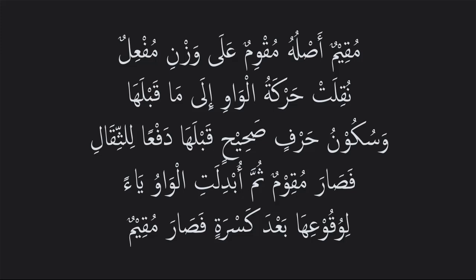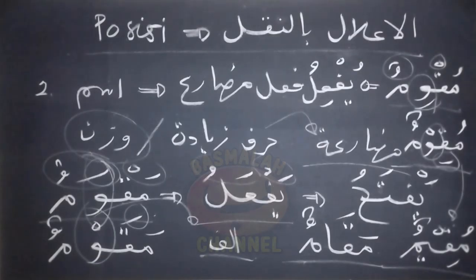Proses i'lalnya dalam bahasa Arab: muk'uamun asluhu muk'uamun ala wazni muf'ilun. Nukilat harkatul wawi ilama qoblaha wasukun waharfin sohehin qoblaha daf'an lifiqol. Artinya: lafad muk'uamun pada asalnya adalah muk'uamun, mengikuti wazan muf'ilun. Harkat dari huruf waw dipindah atau ditukar dengan harkat dari huruf sebelumnya, sementara huruf sebelumnya tersebut berupa huruf soheh yang dalam keadaan sukun, hal itu dilakukan dalam rangka agar supaya menghindari bacaan yang berat, maka jadilah muk'uamun. Selanjutnya huruf waw diganti dengan huruf ya karena posisi daripada huruf waw tersebut terletak setelahnya harkat kasro, maka jadilah lafad muk'uamun.